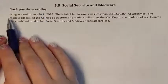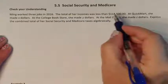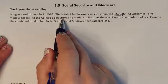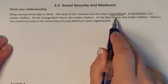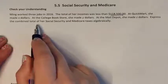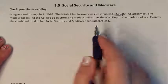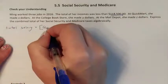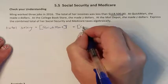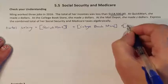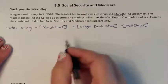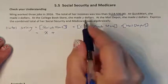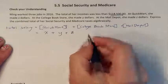Check your understanding: Mean worked three jobs in 2016 and her total income was less than the maximum taxable allowance for Social Security. She worked at Quig Mart and made X dollars, at the college bookstore and made Y dollars, and at the Mail Depot and made Z dollars. So her total salary is X + Y + Z.